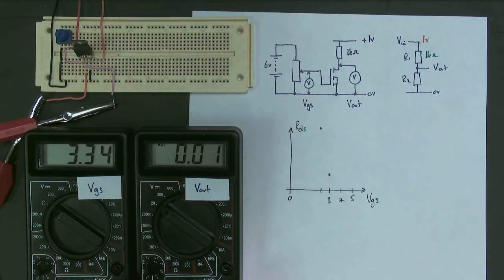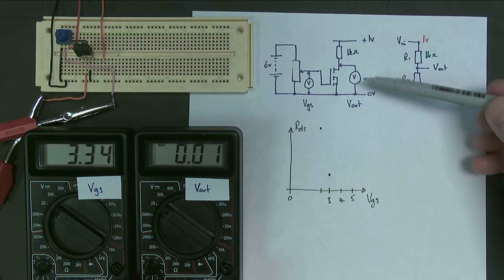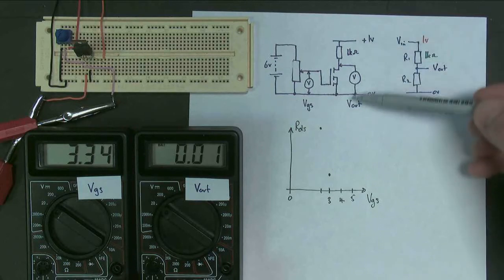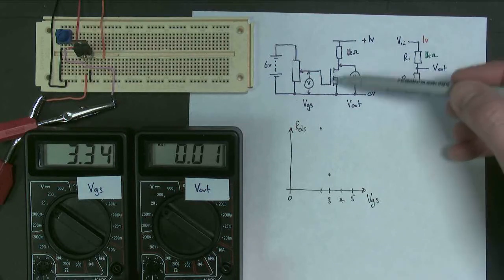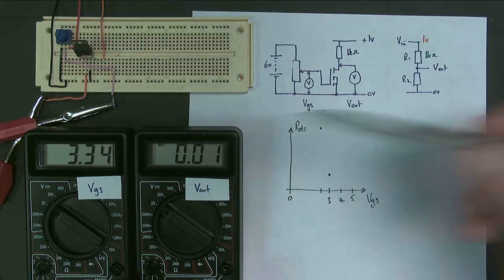There we go. Now the output voltage is at 0.01, which means that this is 1% of the total voltage, which means that this resistor is 1% of the total resistance. So this is now down to about 10 ohms at 3.3 volts.